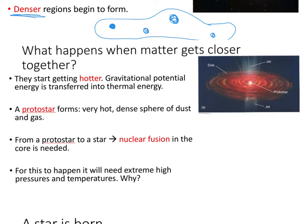A protostar is not a star yet. The only way for a protostar to turn into a star is once nuclear fusion is initiated in the core of the protostar — that's when it goes from a protostar to an actual star. For that to happen, there obviously needs to be extremely high pressures and temperatures. From our nuclear physics topic, we learned that in nuclear fusion, energy is always released depending on which element is formed.